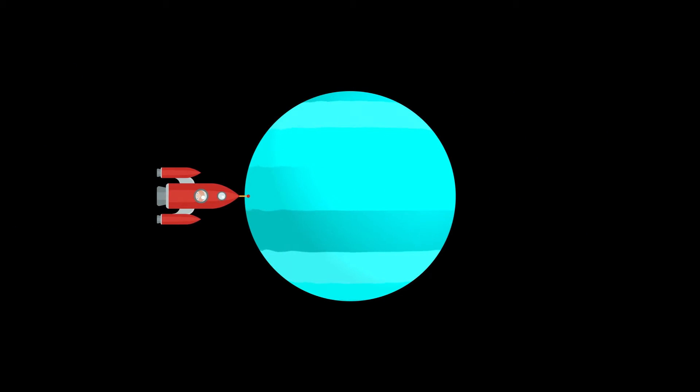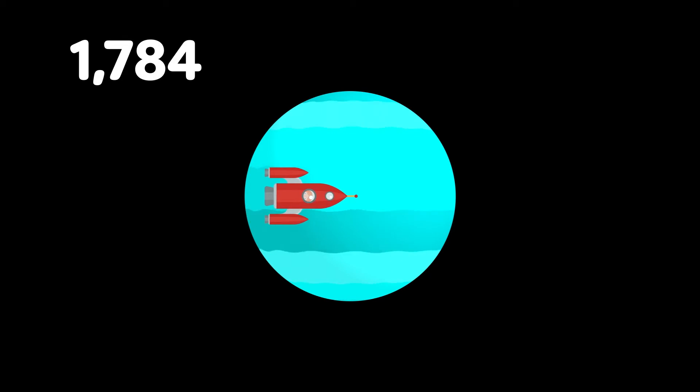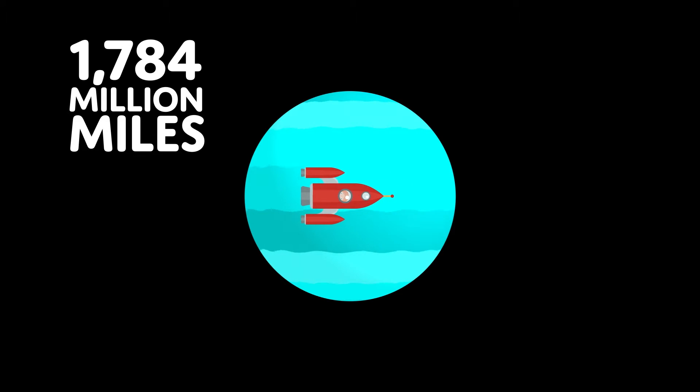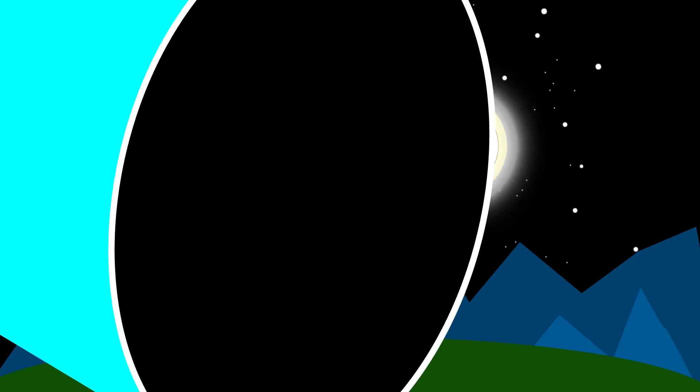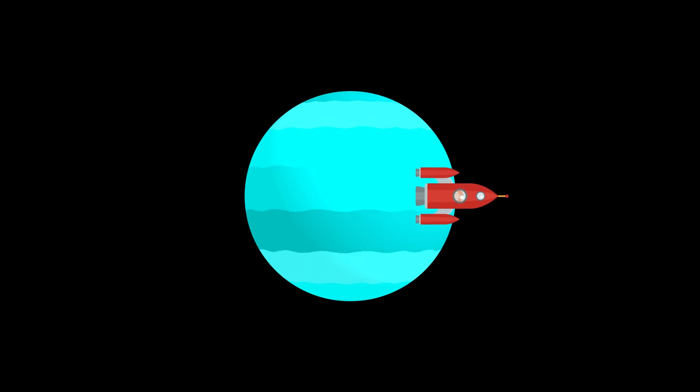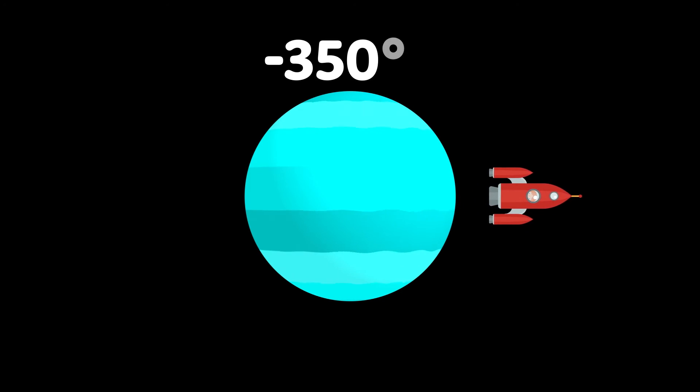The seventh planet is Uranus. It is 1,784 million miles from the sun. You can only see Uranus from Earth with a telescope. It gets very cold here, negative 350 degrees Fahrenheit. Brrr, that's cold!